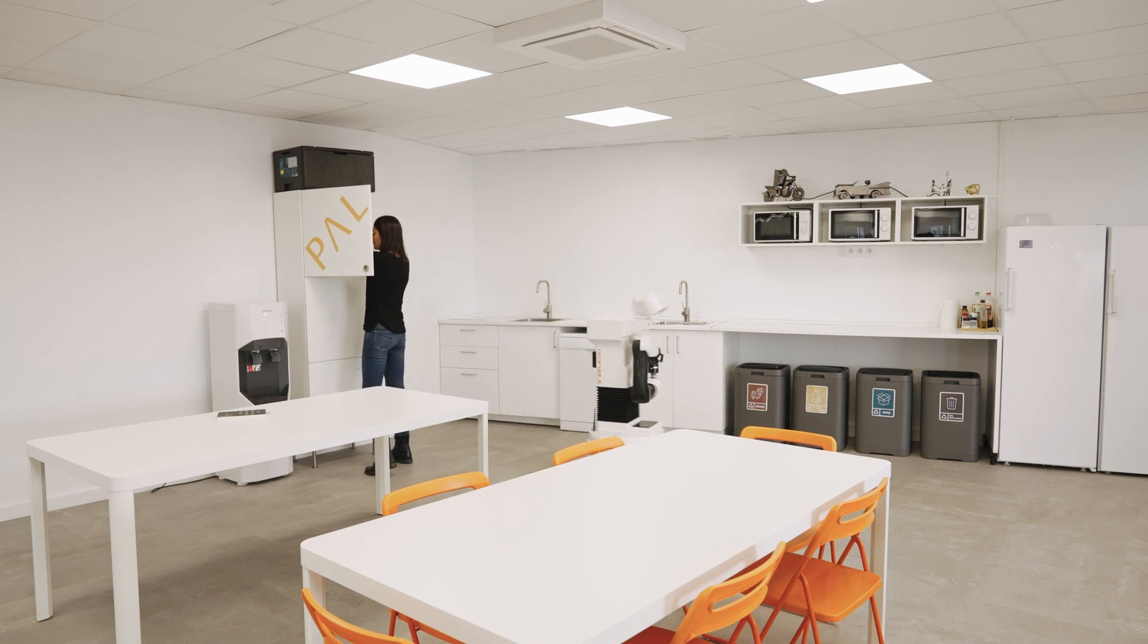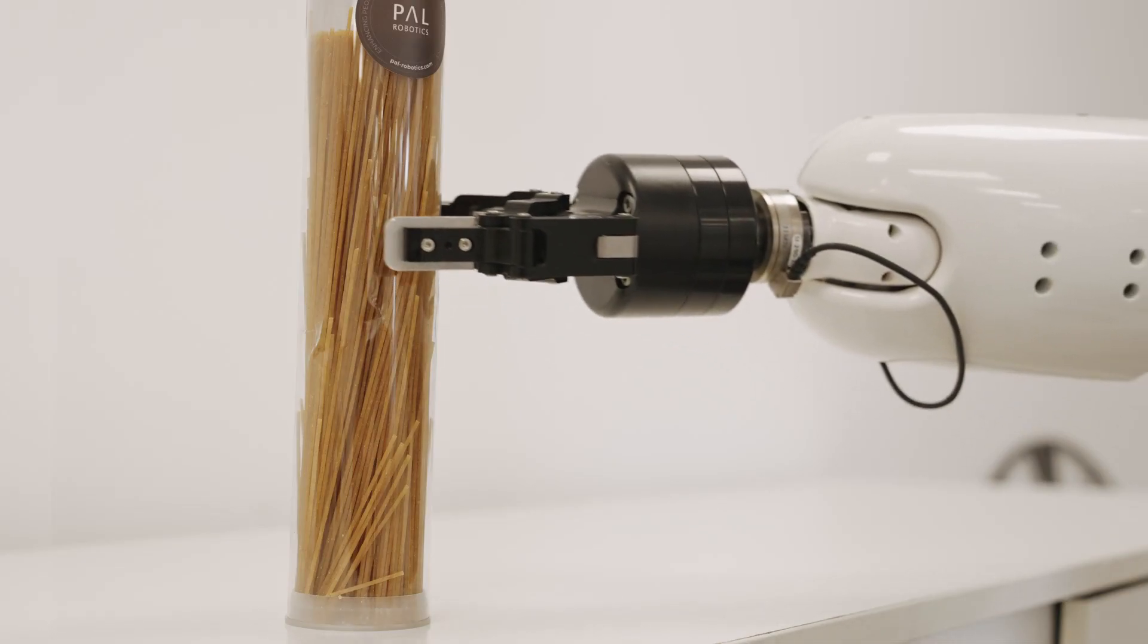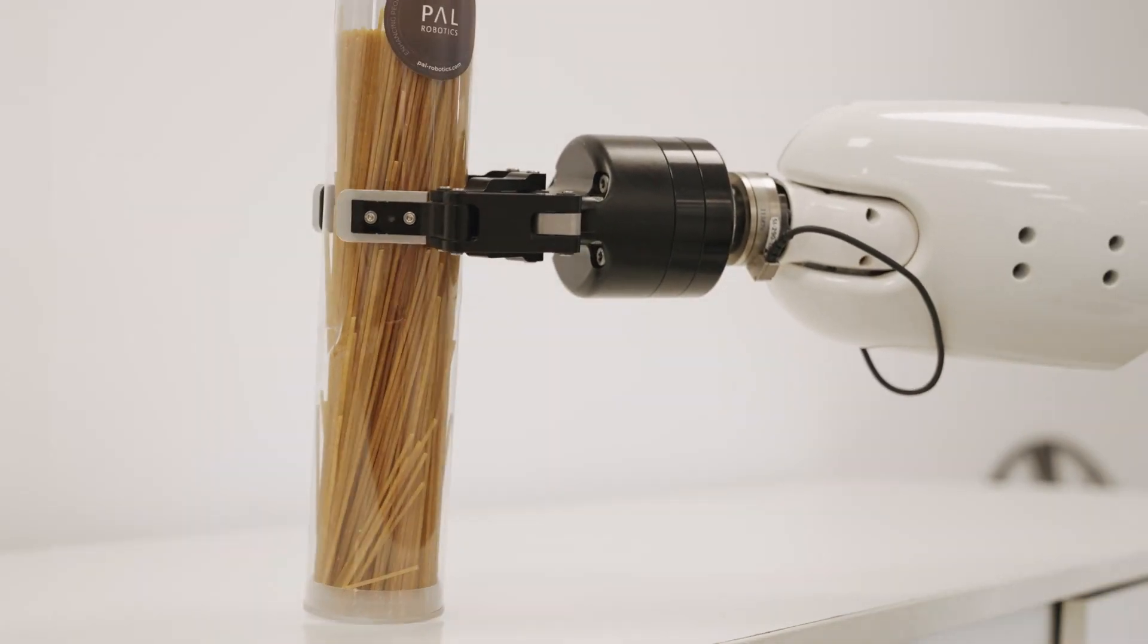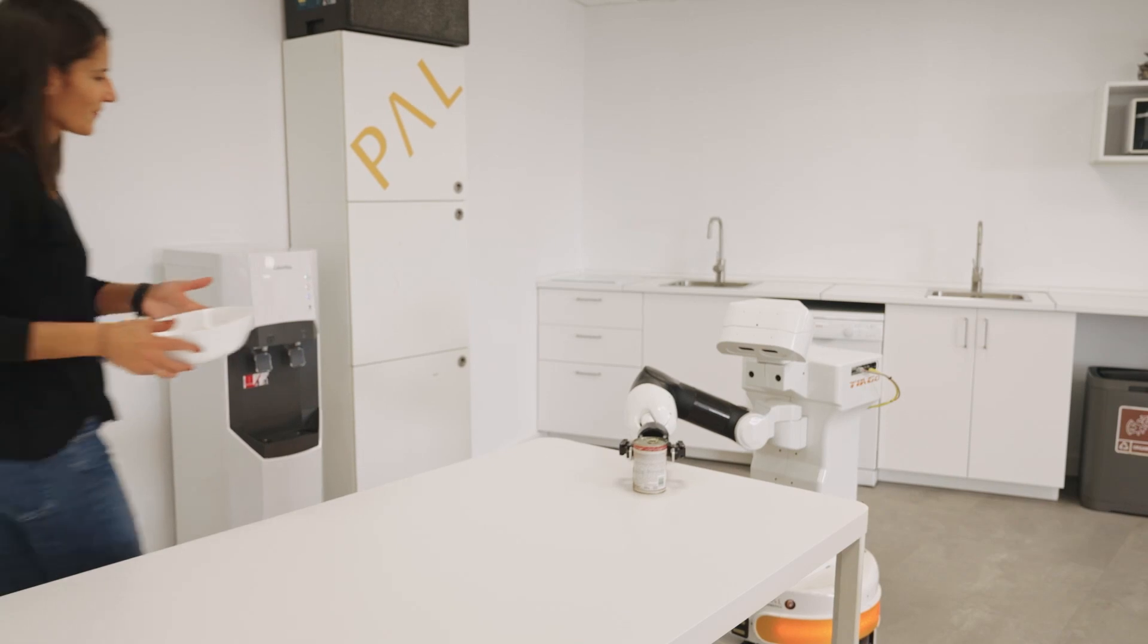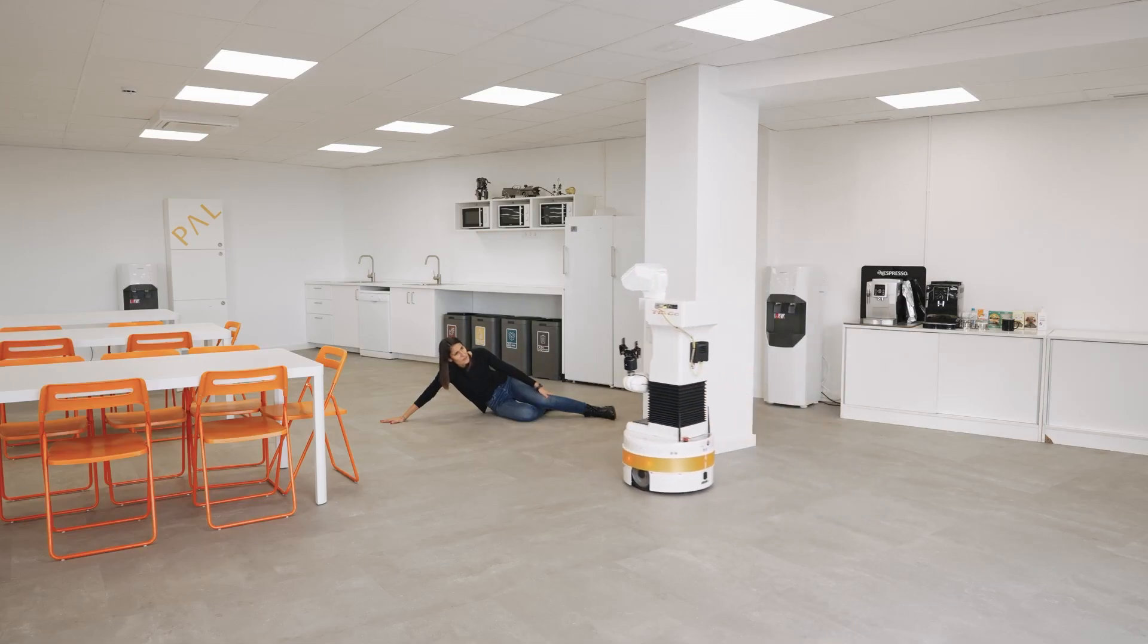In this solution, the Tiago Robot helps a user with mild motor and cognitive impairments by using both speech interaction and its object manipulation capabilities. This video shows an example of helping during the preparation of a meal and reacting to emergency situations.